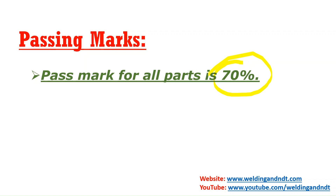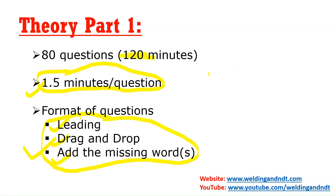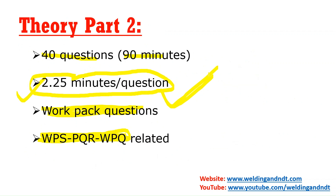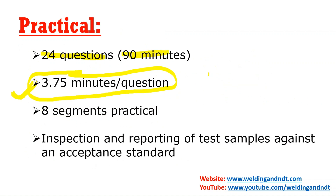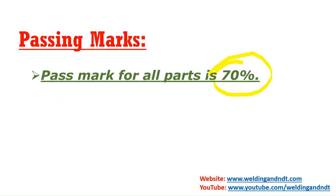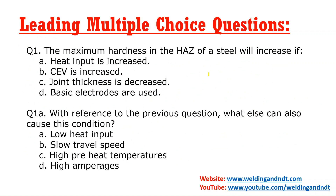Passing marks for each part is 70 percent. You have to get a minimum of 70 percent in Part 1, a minimum of 70 percent in Part 2, and a minimum of 70 percent in Practical also. In each paper you need 70 percent. If you get 70 percent in each paper, then you will be qualified.